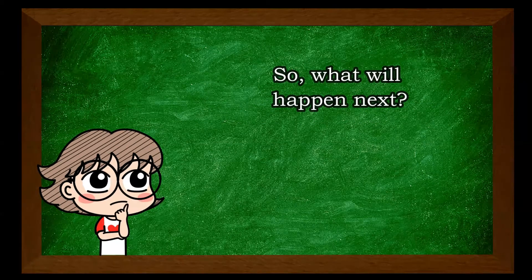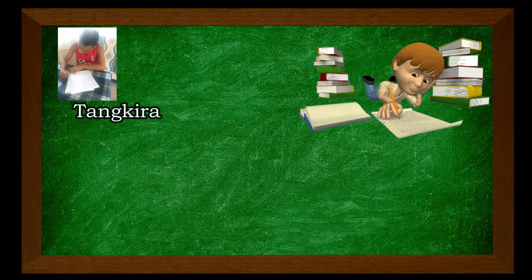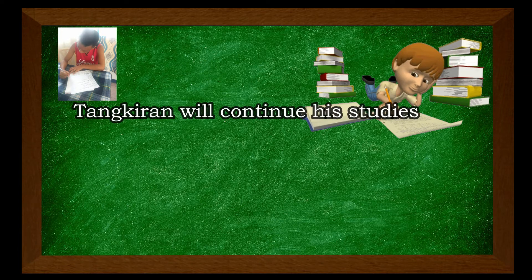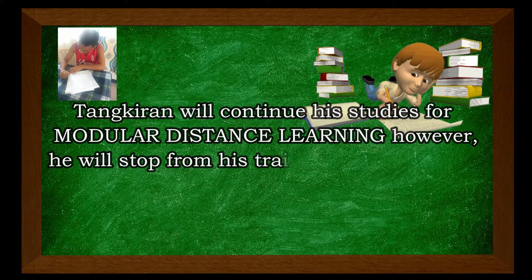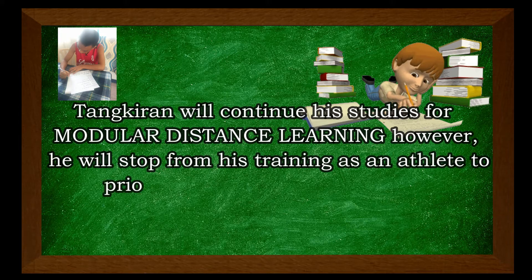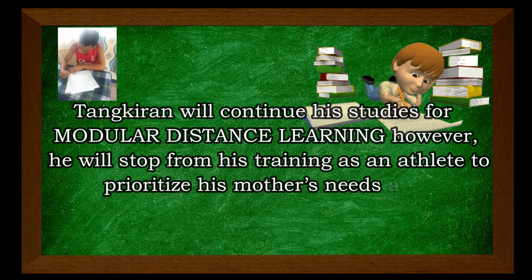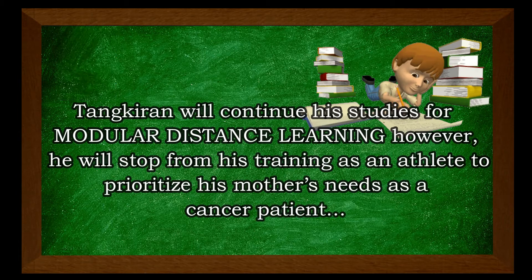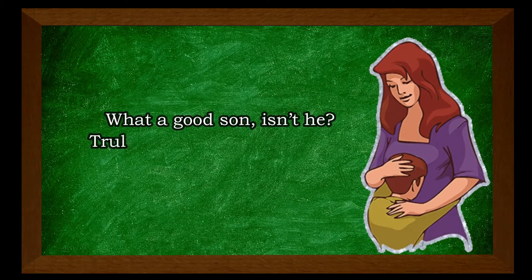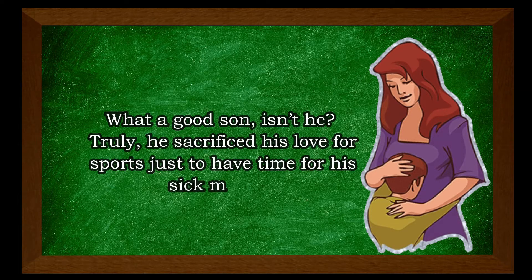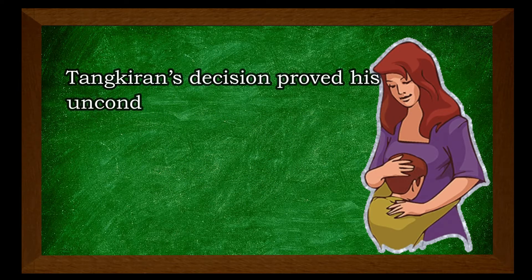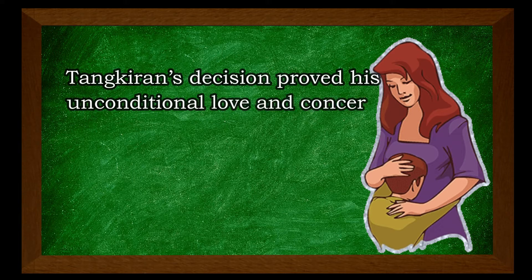But being an athlete and a student are both important to Tangkiran. So, what will happen next? Tangkiran will continue his studies for modular distance learning. However, he will stop from his training as an athlete to prioritize his mother's needs as a cancer patient. What a good son, isn't he? Truly, he sacrificed his love for sports just to make time for his mother. Tangkiran's decision proved his unconditional love and concern for his mother.